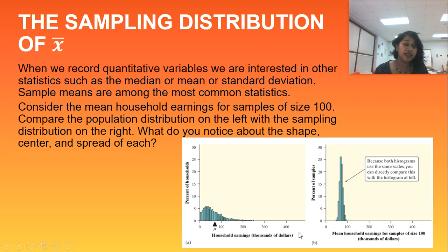So let's just jump on in to our sampling distribution of x bar. Again, in this one we're talking about quantitative variables. If I consider the mean household earnings for sample sizes of 100, so n equals 100, then look at the population distribution on the left and look at the sampling distribution on the right. Make note of that language and know the difference between a population distribution, a samples distribution, and then a sampling distribution.